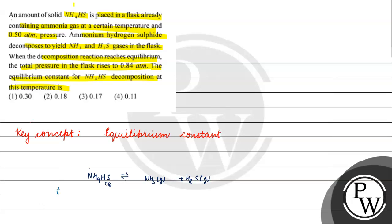At time t=0, ammonia gas is 0.5 atm. H2S is not present initially, but ammonia is present at 0.5 atm.